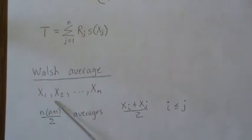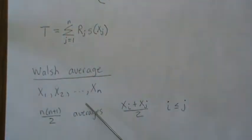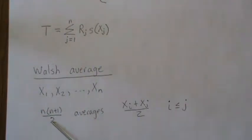The Walsh averages: if we have our data one to n, we take the n plus one over two averages.